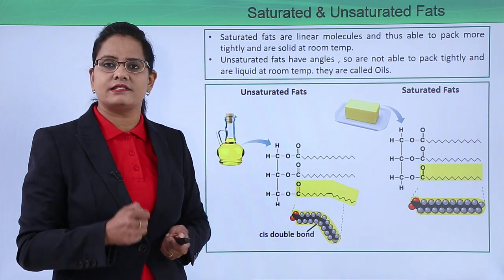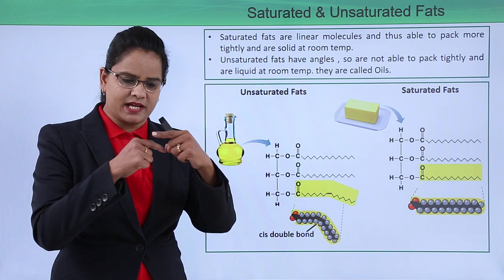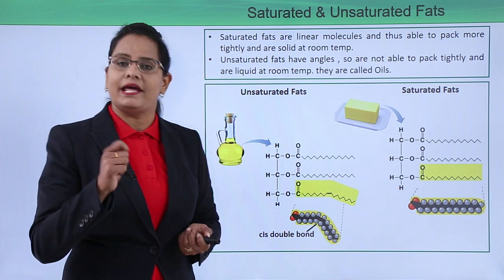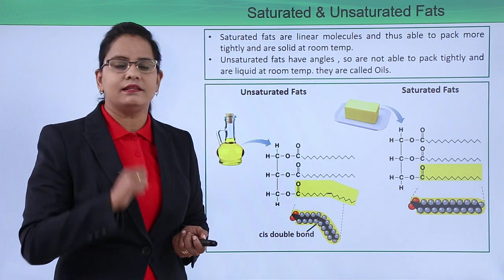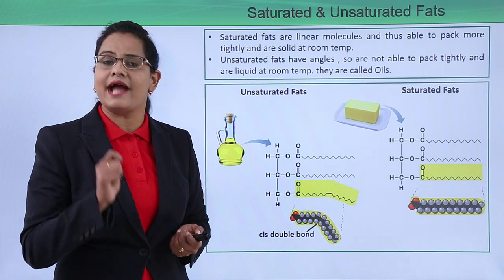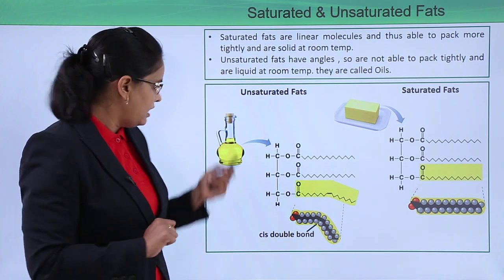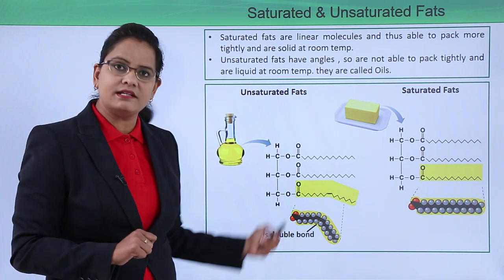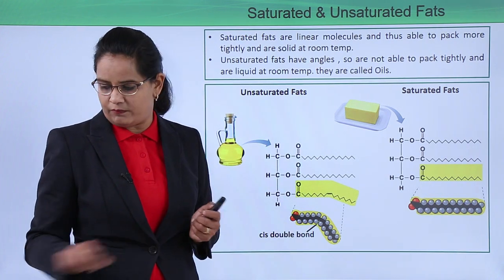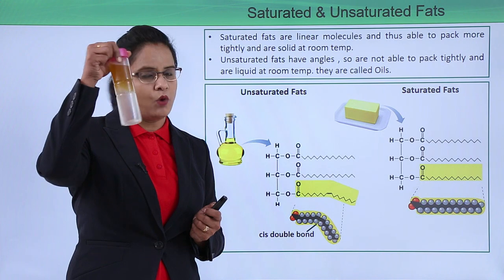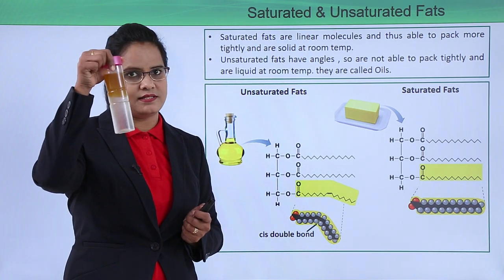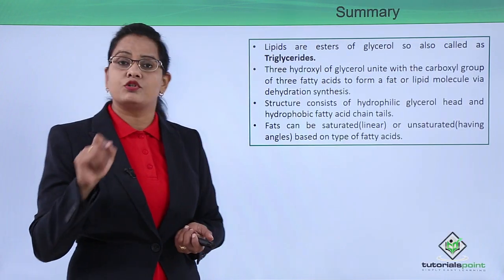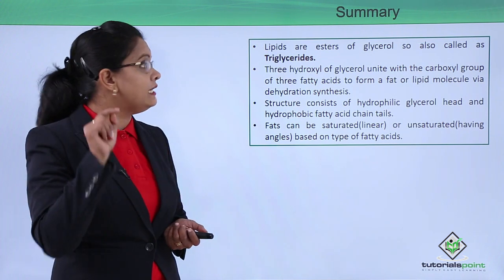Unsaturated fatty acids, on the other hand, have double bonds that create a kink or angle in the chain. Because of this kink they are not able to pack tightly, so they are liquid at room temperature — just like oils. You can see the double bond in the chain causing the angle to form. So, looking at this structure, can you tell whether it is saturated or unsaturated?